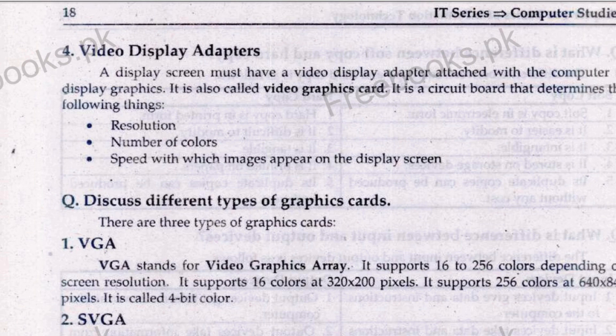So, display screens — what we call monitors — have four main features which differ between display screens. First is size, second is color, third is resolution or sharpness or image quality, and fourth is video display adapters or video graphic cards. I hope you understand. If there are any questions, you can ask and I will answer. Thank you so much.